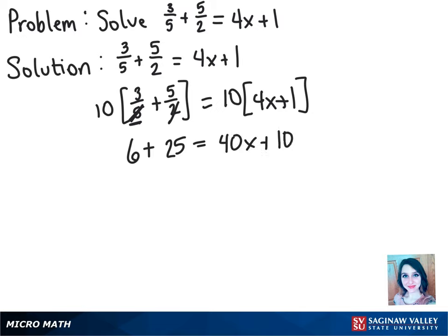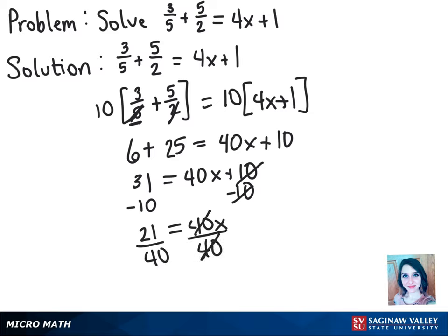Now we can combine these two constants to get 31 equals 40x plus 10, and we want to work on getting x by itself now. So let's subtract this 10 from both sides to get rid of it on the x side. We have 21 equals 40x, and let's also divide by 40 to get rid of the coefficient in front of the x. And doing so gives us x equals 21 over 40, and that is our solution.